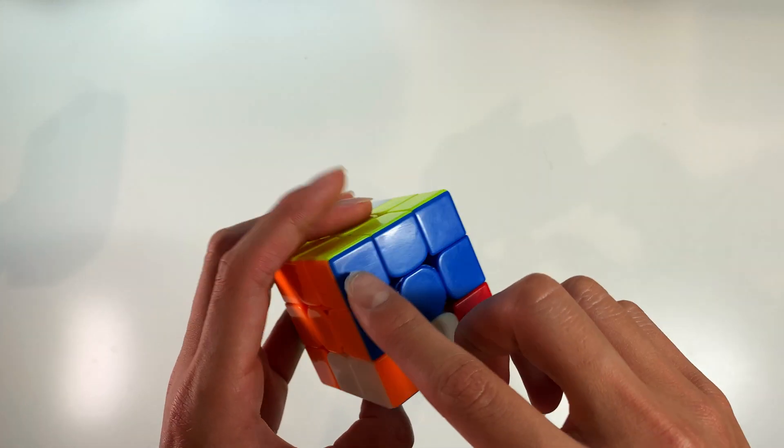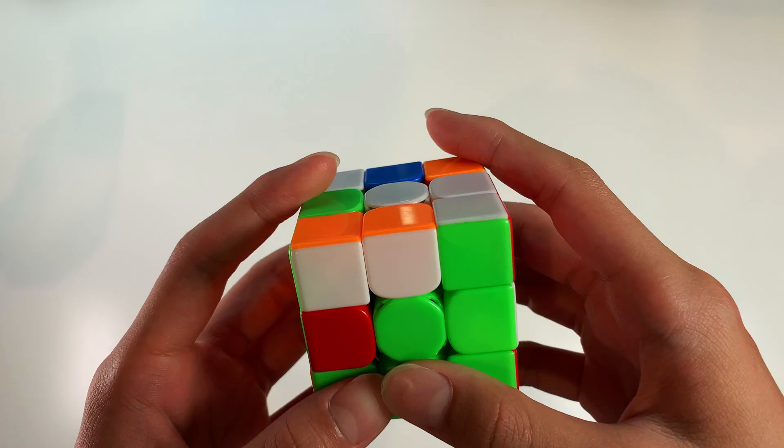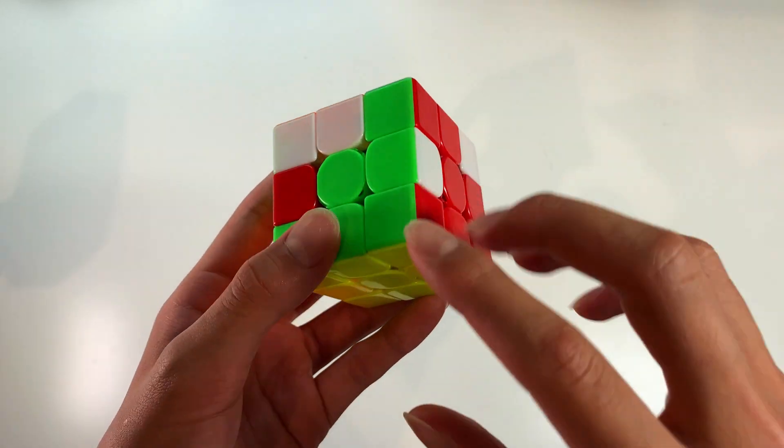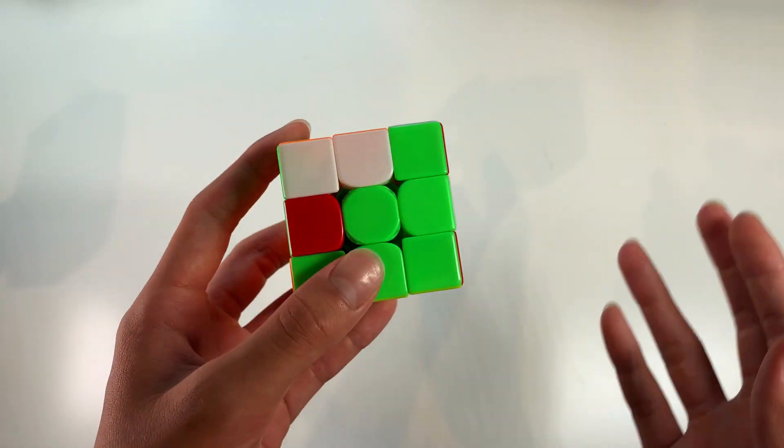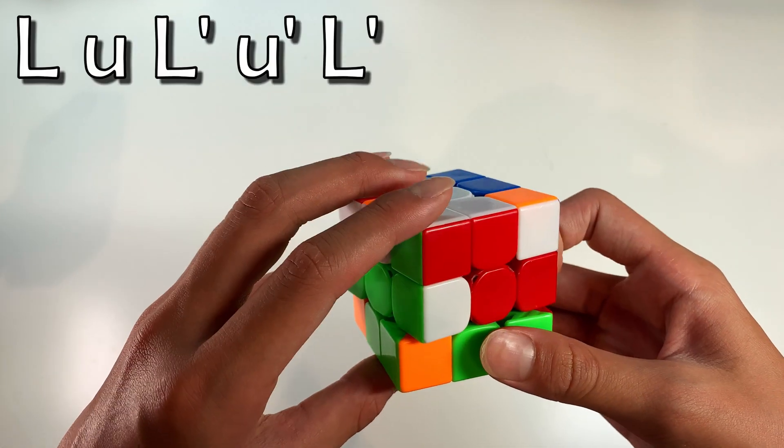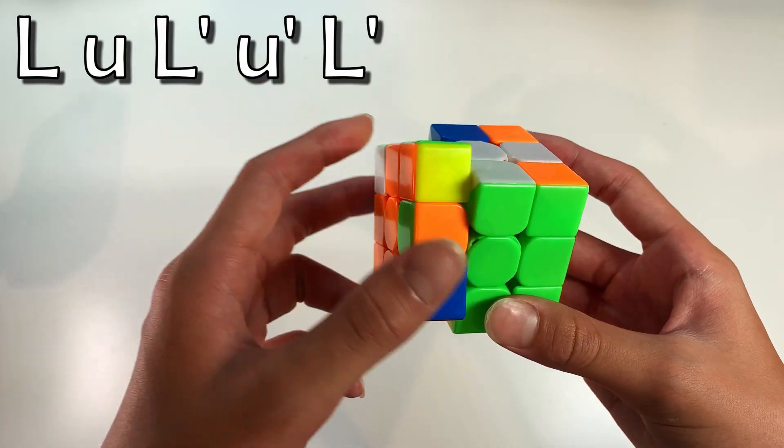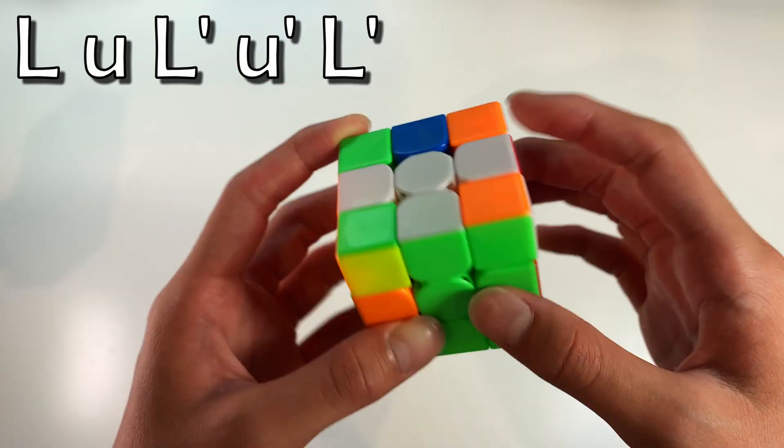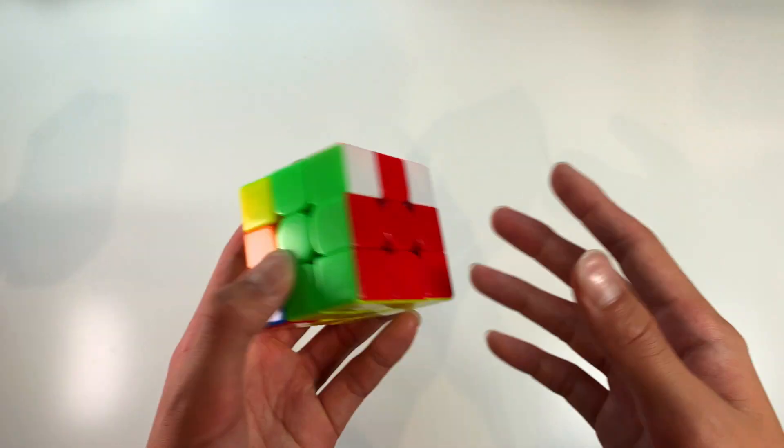The great thing about this is that it also does not interfere with any of the pairs at the back. Now the same also goes for the mirror of the case when the corner that is solved is in the right slot and the edge is in the left slot. You can do the exact same algorithm like this, and that will also preserve both pairs in the back but just solve the right pair instead.